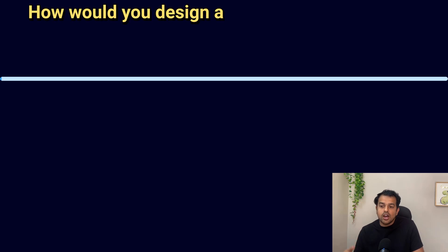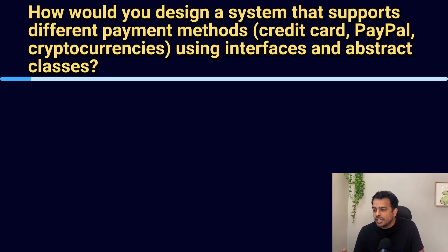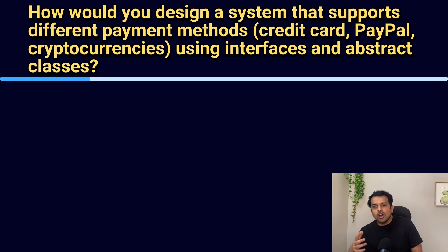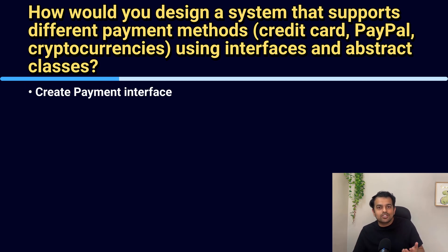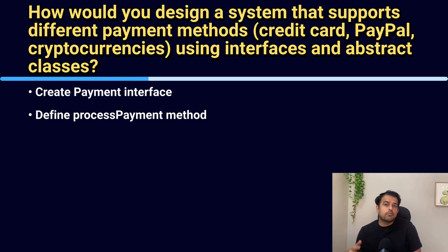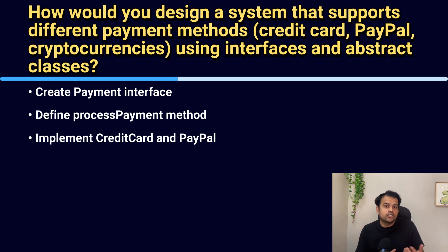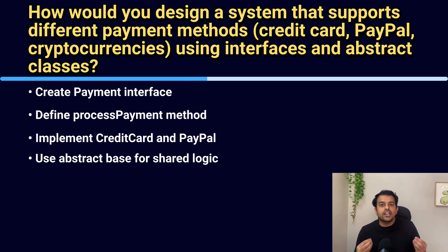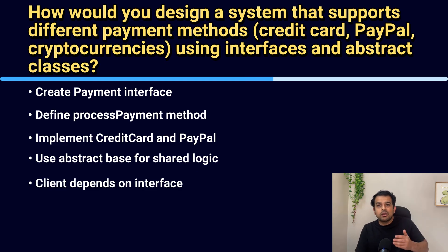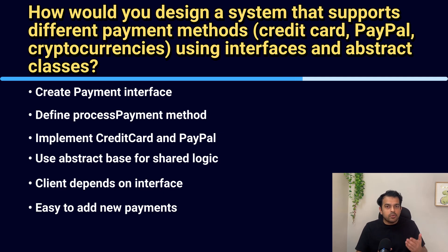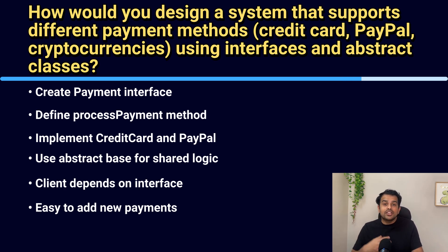Next question: how would you design a system supporting different payment methods like credit card, PayPal, and cryptocurrency using interfaces and abstract classes? Create a payment interface with a common method like processPayment. Then create classes like CreditCardPayment or PayPalPayment implementing it. If you need shared logic, use an abstract class like BasePayment — each payment type implements its own processing logic. The client code only depends on the interface, so adding a new payment option becomes easy. This follows the open-close principle of SOLID design.